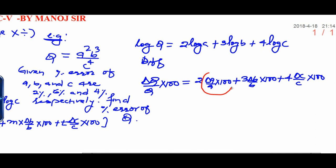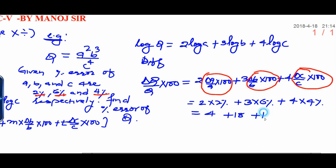Percentage error of a is 2% and percentage error of b is 6%. Percentage error of c is 4%. Now, substituting these values, you will get 2 into 2% plus 3 into 6% plus 4 into 4%. Final result will be 4 plus 18 plus 16 that will be 38%.